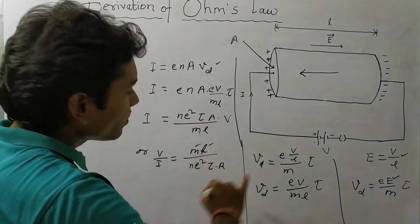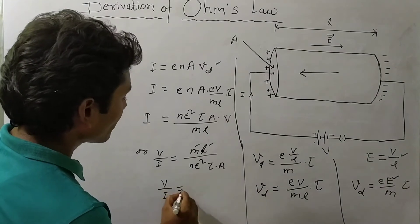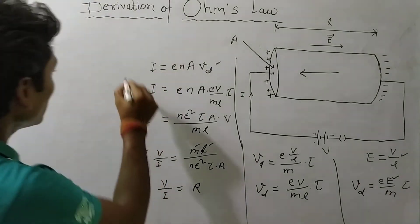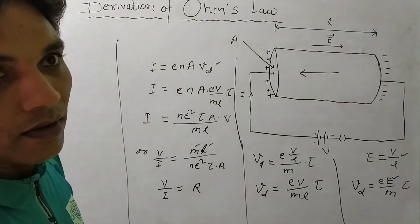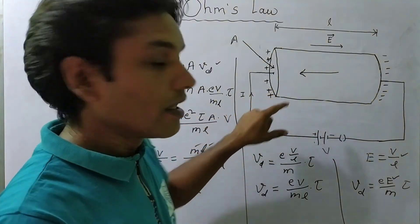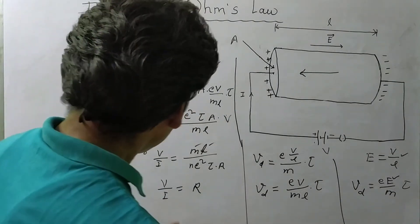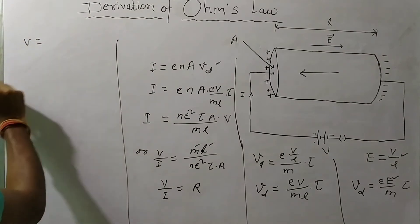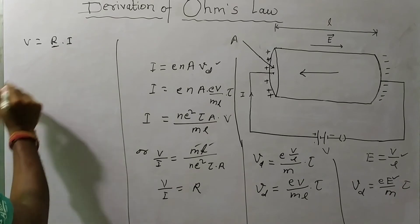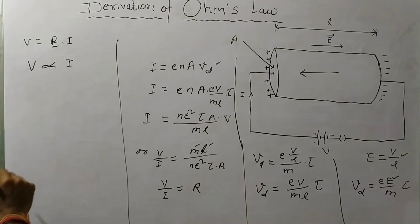Since all these values are constant, they can be replaced by another constant. So V/I equals a constant, which we call R — capital R — the resistance. When current is made to flow through the conductor, R is called the resistance of the conductor. Therefore, V = R × I. Since R is constant, this equation can be written as V ∝ I.